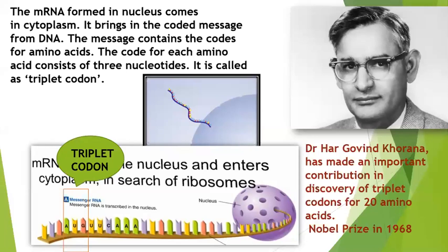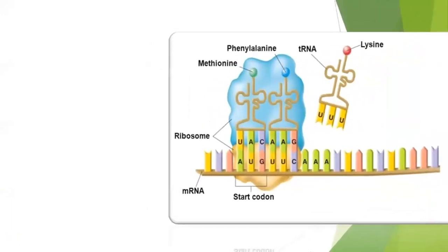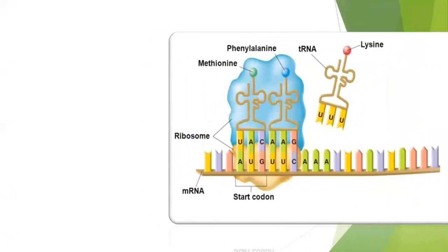mRNA has codons and these codons are read by the ribosomes. The ribosome is made up of a special type of RNA called ribosomal RNA, or rRNA. So rRNA is present in the ribosome — hence the name ribosomal RNA.